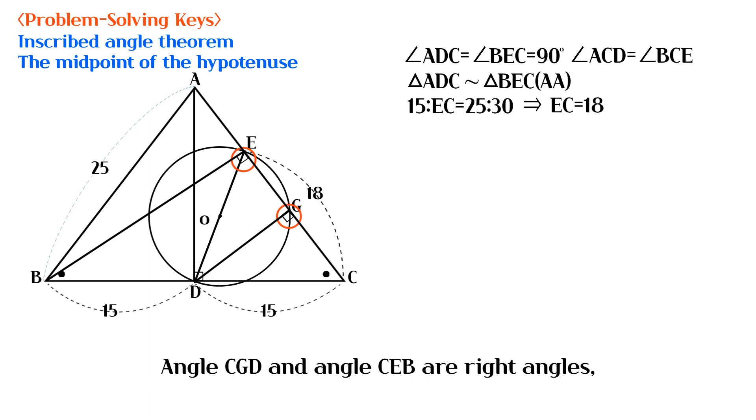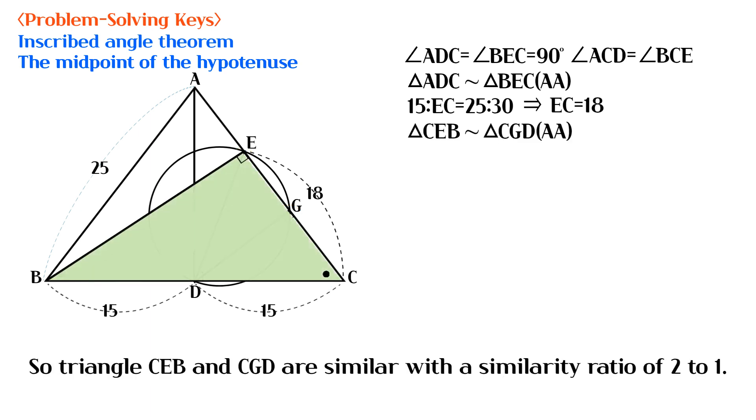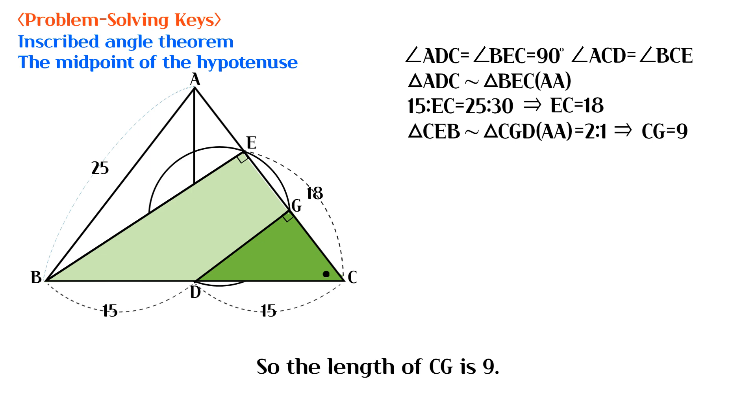Angle CGD and angle CEB are right angles, and angle C is a shared angle. So triangle CEB and CGD are similar with a similarity ratio of 2 to 1. So the length of CG is 9.